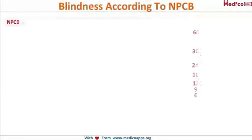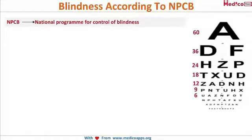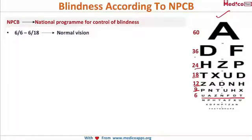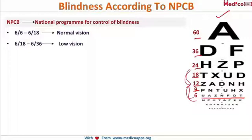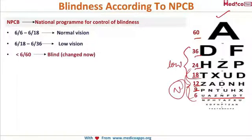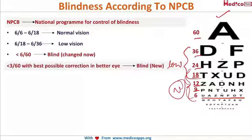Now let's define blindness. According to NPCB — the National Program for Control of Blindness — 6/6 to 6/18 is normal vision. Looking at the Snellen's chart: 6/6, 6/9, 6/12, 6/18, 6/24, 6/36, and 6/60. Vision from 6/18 to 6/36 is defined as low vision. Previously, anything less than 6/60 was defined as blind.